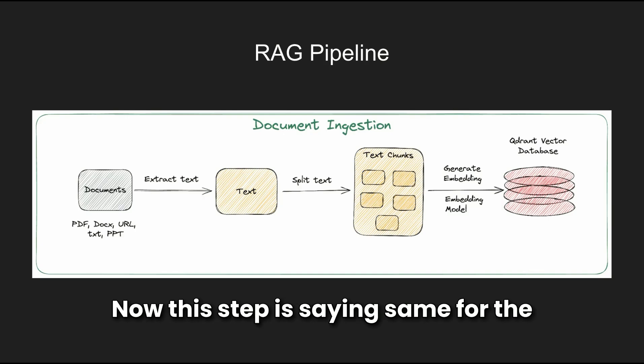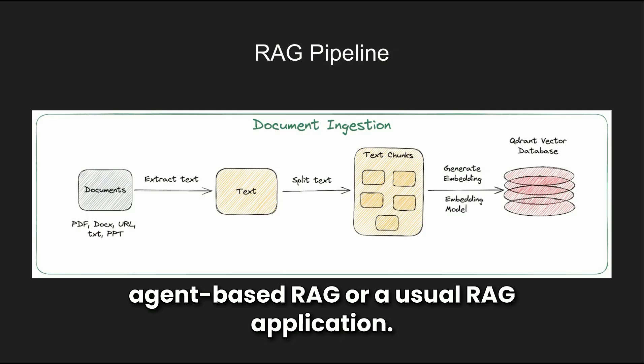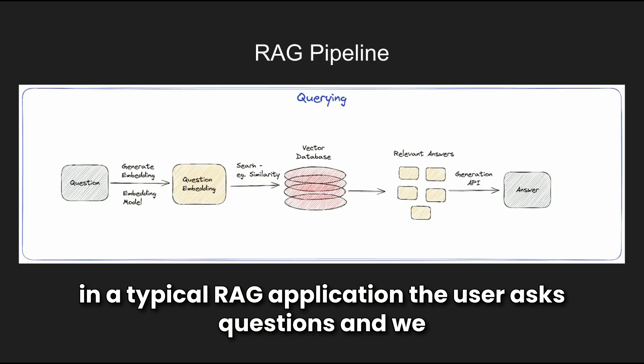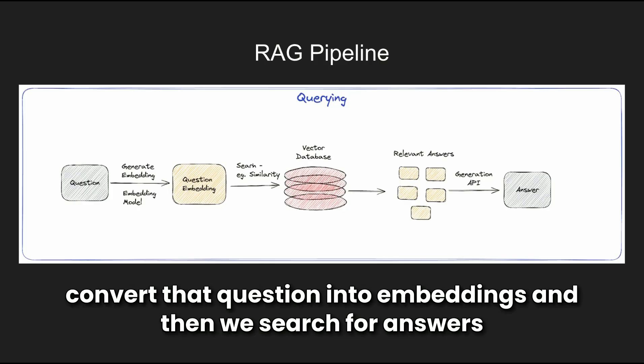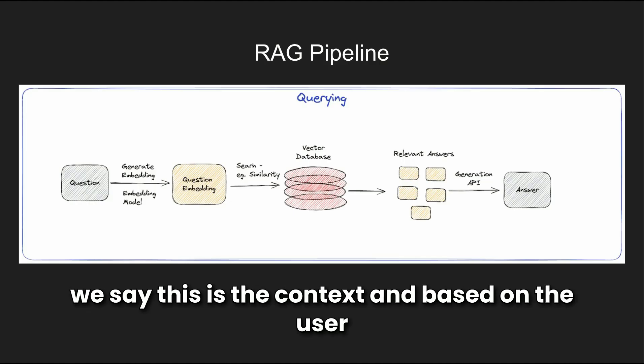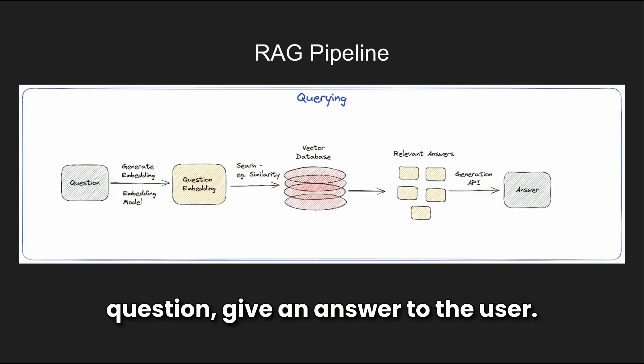This ingestion step is the same for both agent-based RAG and a usual RAG application. What changes is that in a typical RAG application, the user asks questions, we convert that question into embeddings, search for answers in our vector database, send it to an LLM, and say: here is the context — based on the user question, give an answer.